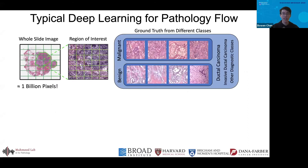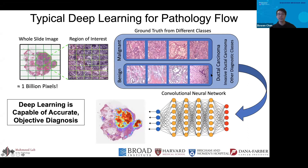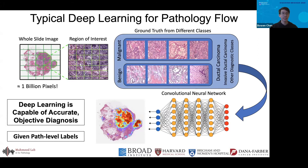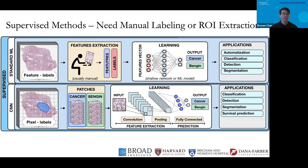Let me give a quick overview of the deep learning for pathology workflow before getting to the demo. The typical workflow involves taking a whole slide image, extracting regions of interest, and then training a convolutional neural network based on ground truths from different classes. Although these deep learning methods are shown to be accurate and can achieve objective diagnoses, supervised methods usually require manual labeling, such as pixel-level annotations or manual highlighting of regions of interest.